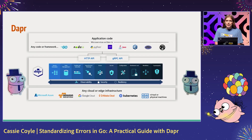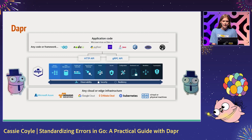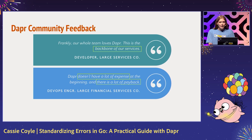My name is Cassie Coyle. I'm a software engineer at Diagrid, and on the right are my teammates and the Dapr open source team at Diagrid. Dapr stands for Distributed Application Runtime. It's a portable event-driven runtime for building distributed apps across the cloud and edge. It's a set of APIs for building secure and reliable microservices in a cloud-native environment. Dapr is the 10th largest CNCF project with a ton of companies using it, and our community says that Dapr is the backbone of their services.